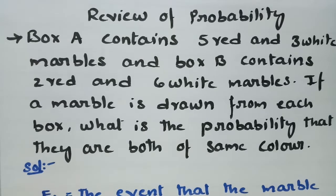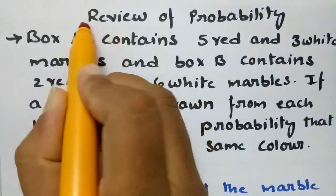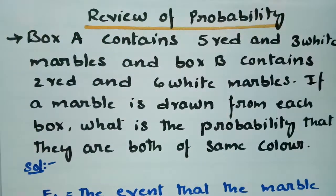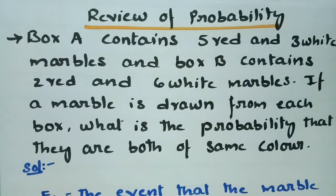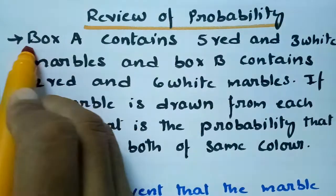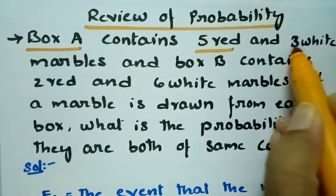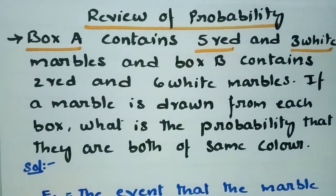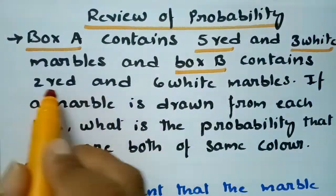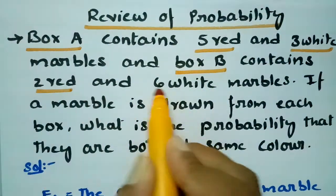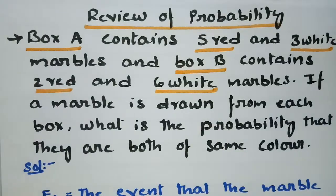Today's problem is from review of probability. Box A contains 5 red and 3 white marbles, and box B contains 2 red and 6 white marbles.